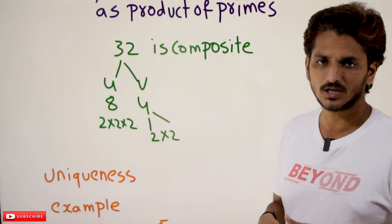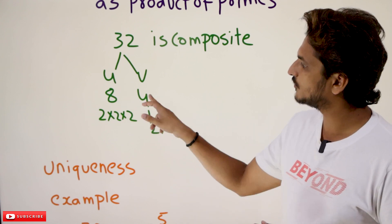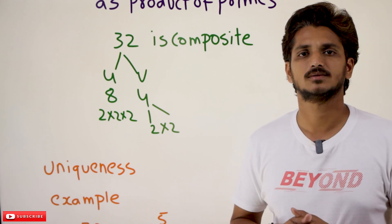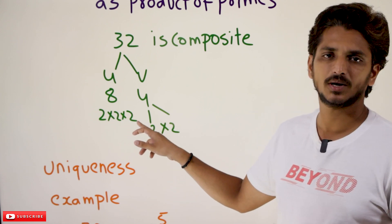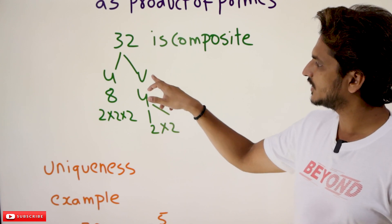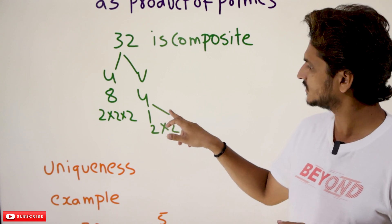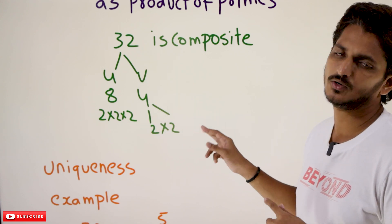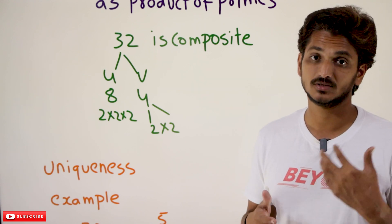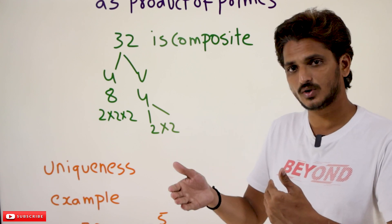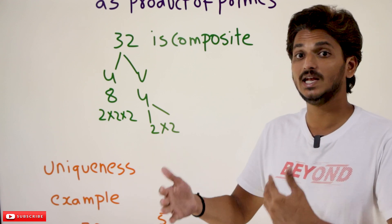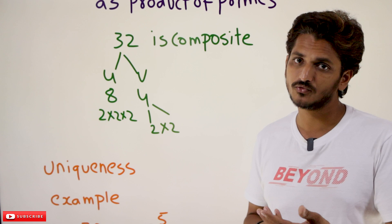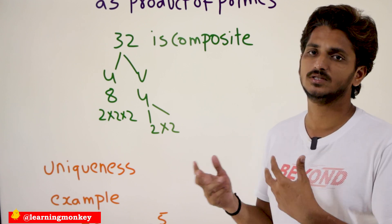Let us take 32. 32 is not a prime number. It can be expressed as u = 8 and v = 4. Now, 8 and 4 are already expressed as products of prime numbers: 8 = 2 × 2 × 2 = 2³, and 4 = 2 × 2. Therefore 32 = 2 × 2 × 2 × 2 × 2 = 2⁵. That is how 32 is expressed as a product of prime numbers. Like that, 33, 34, any number can be expressed, because all previous numbers are already expressed as products of prime numbers.